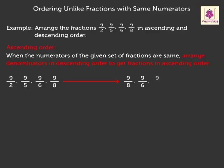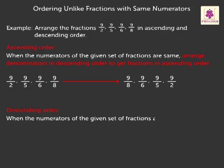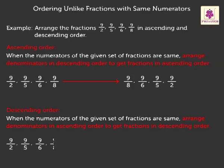For descending order, when the numerators of the given set of fractions are the same, arrange the denominators in ascending order to get fractions in descending order. Thus we get descending order as: 9 upon 2, 9 upon 5, 9 upon 6, and 9 upon 8.